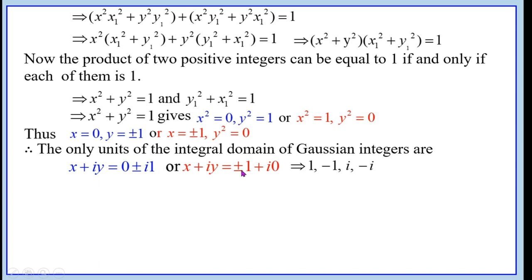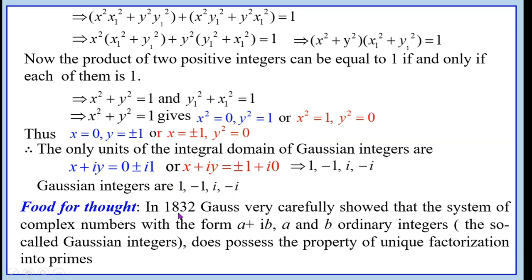Therefore, 1, −1, i, −i are the only units of the integral domain of Gaussian integers. In 1832, Gauss carefully showed that the system of complex numbers of the form a + ib, where a and b are ordinary integers — the so-called Gaussian integers — does possess the property of unique factorization into primes.